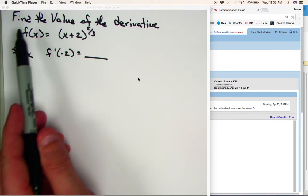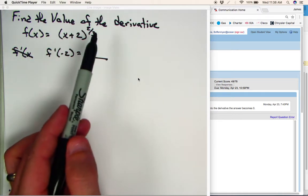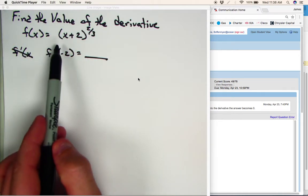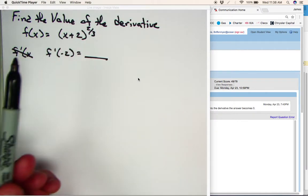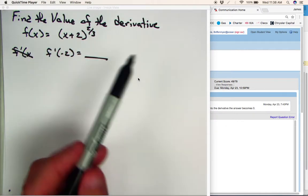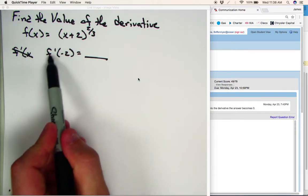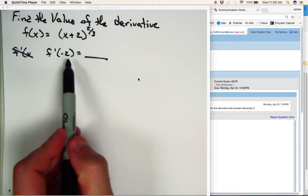So the question that we have is, find the value of the derivative at the extremum, f of x is equal to x plus 2 raised to the 2 over 3 power. Now, technically, we're trying to find the derivative, or a value at the derivative. In other words, f prime of negative 2 equals what?